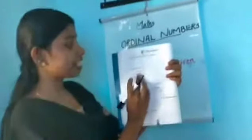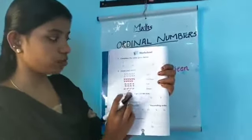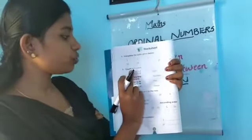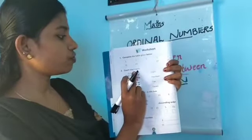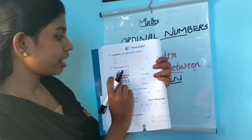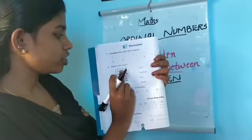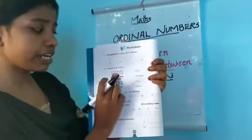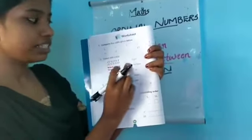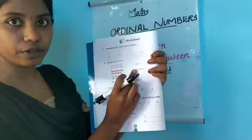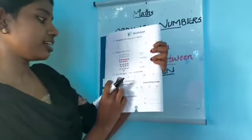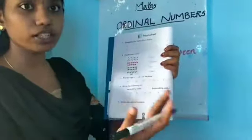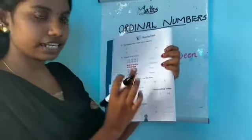Next activity: count and match. Count the objects and match to the correct number. For example, counting pencils: one through fourteen — fourteen pencils. Match it to number fourteen. Then put the correct sign: greater than, less than, or equal to.